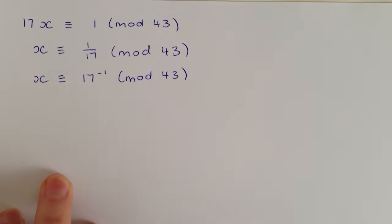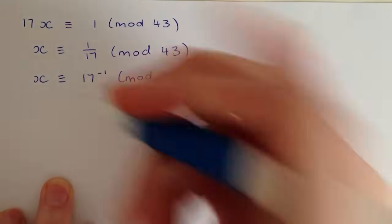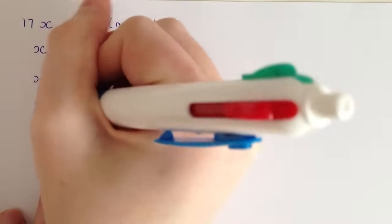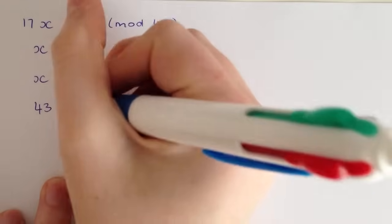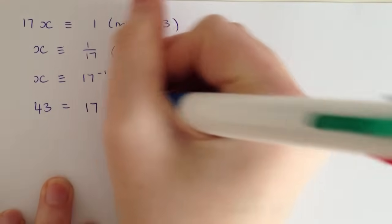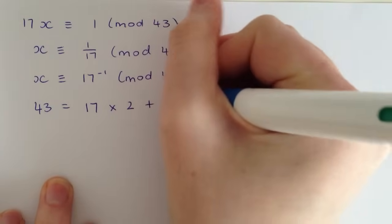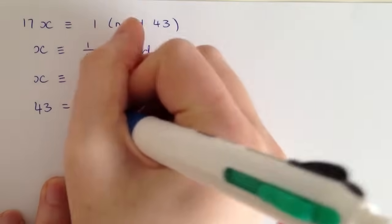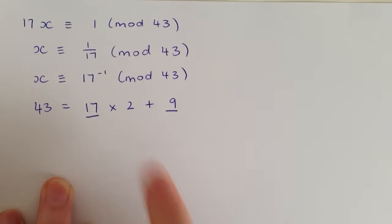Now to work that out, we use the Euclidean algorithm and the extended Euclidean algorithm. So we start off with 43 here, and that'll be equal to 17 times 2 plus 9. We want to underline these two here, just so we remember those are the two that we want to bring down next time.